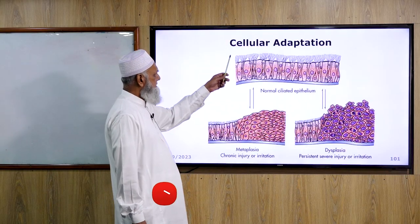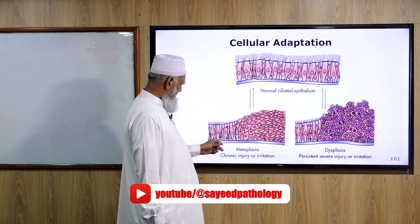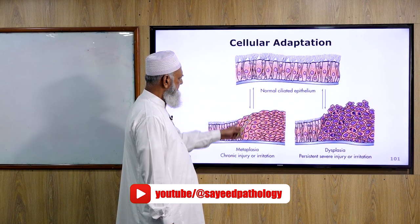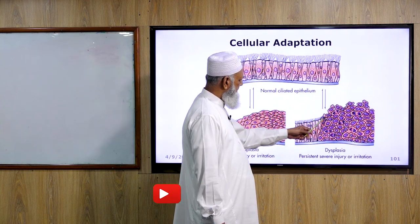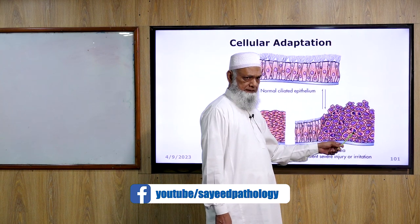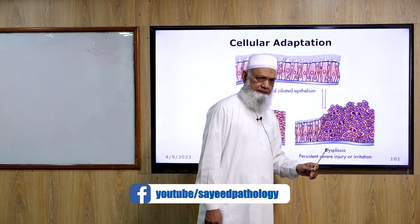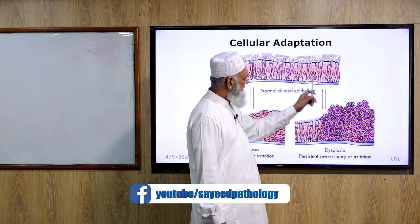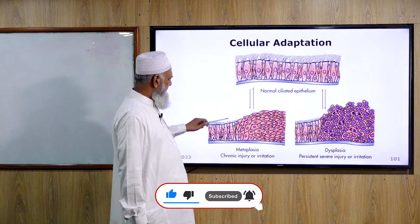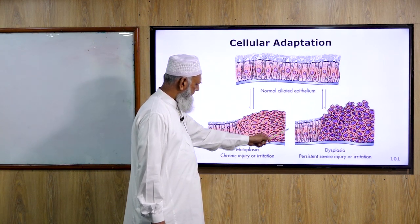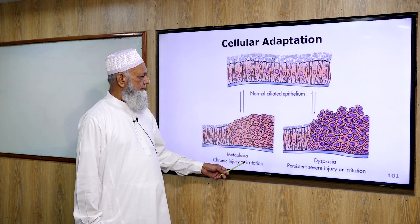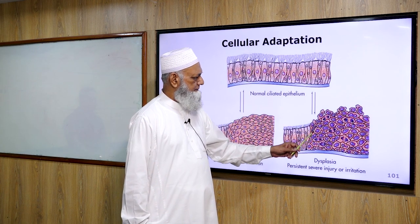This picture shows cellular adaptation: normal ciliated columnar epithelium replaced by squamous epithelium — a reversible process. This also shows ciliated columnar epithelium replaced by squamous epithelium of abnormal development. Mild, moderate, and severe dysplasia are shown; dysplastic cells are visible. Mild and moderate dysplasia can reverse to normal, but severe dysplasia or carcinoma in situ never reverses to normal. This shows metaplasia where ciliated columnar epithelium is replaced by squamous epithelium, and dysplasia where ciliated columnar epithelium is replaced by dysplastic cells.